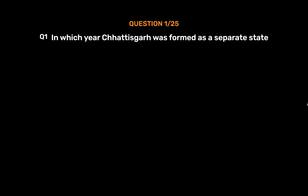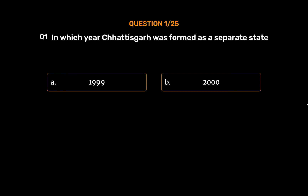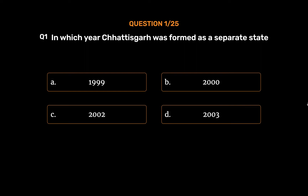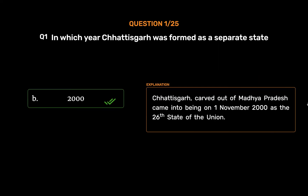Question No. 1: In which year was Chhattisgarh formed as a separate state? Option A: 1999. Option B: 2000. Option C: 2002. Option D: 2003. The correct answer is Option B: 2000. Chhattisgarh, carved out of Madhya Pradesh, came into being on 1st November 2000 as the 26th state of the union.